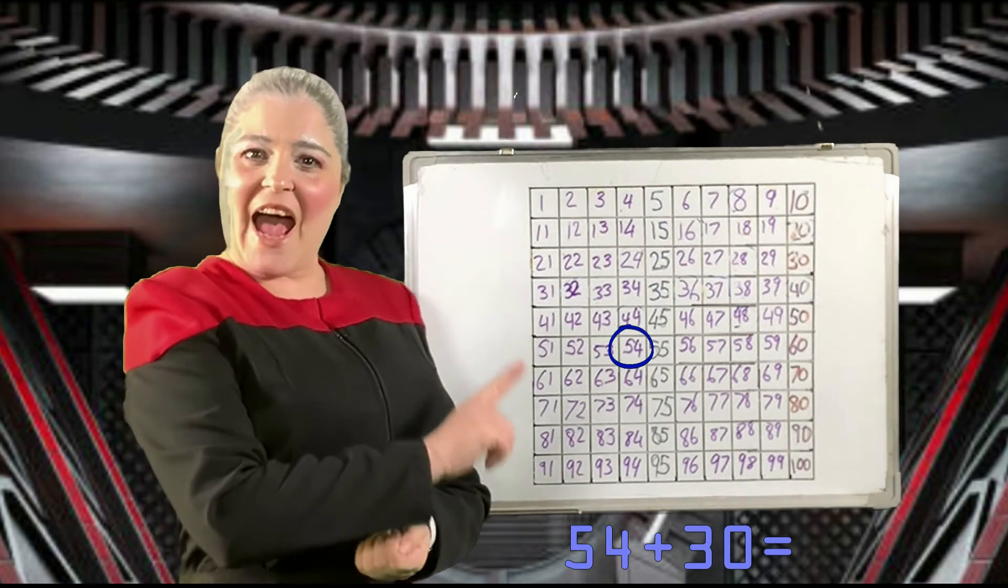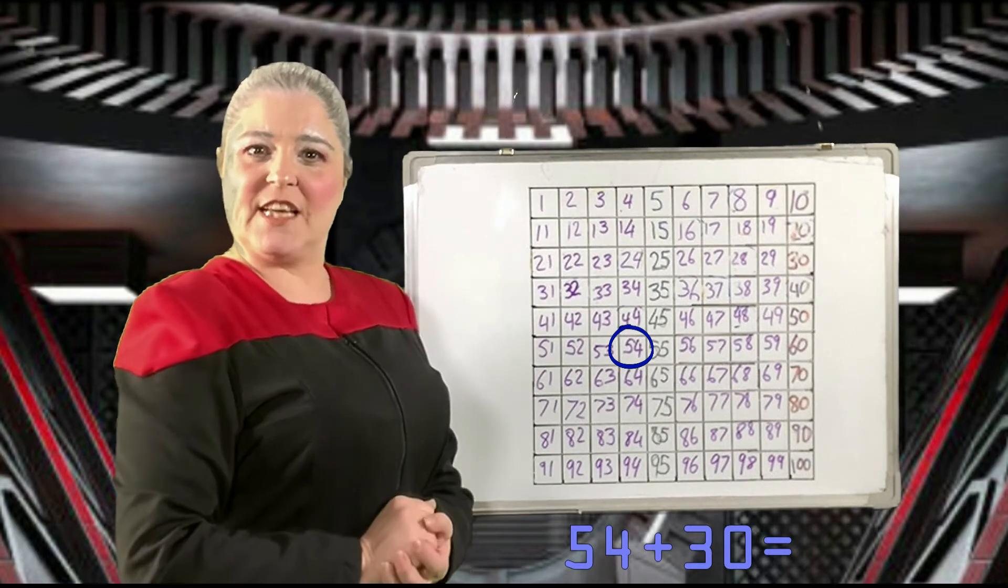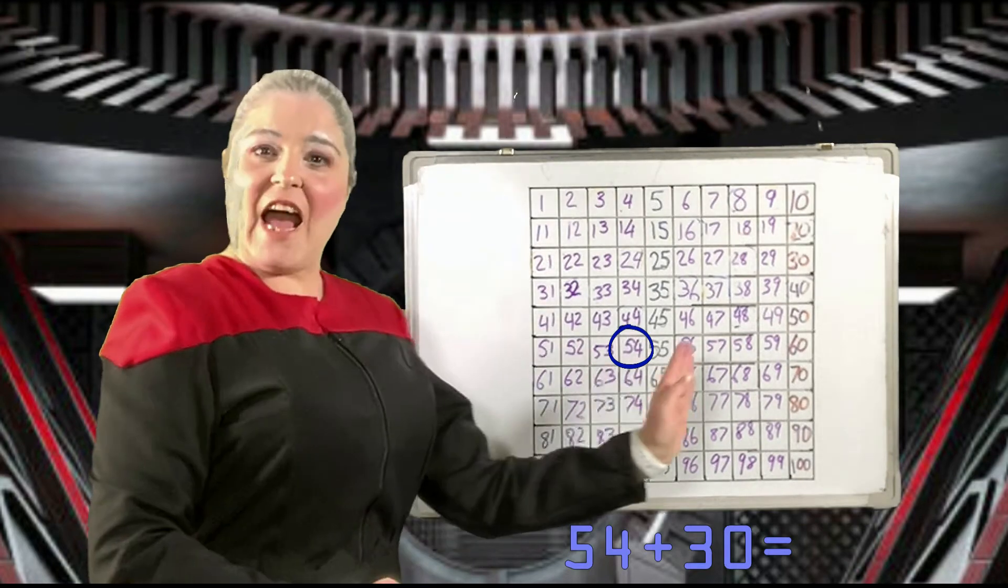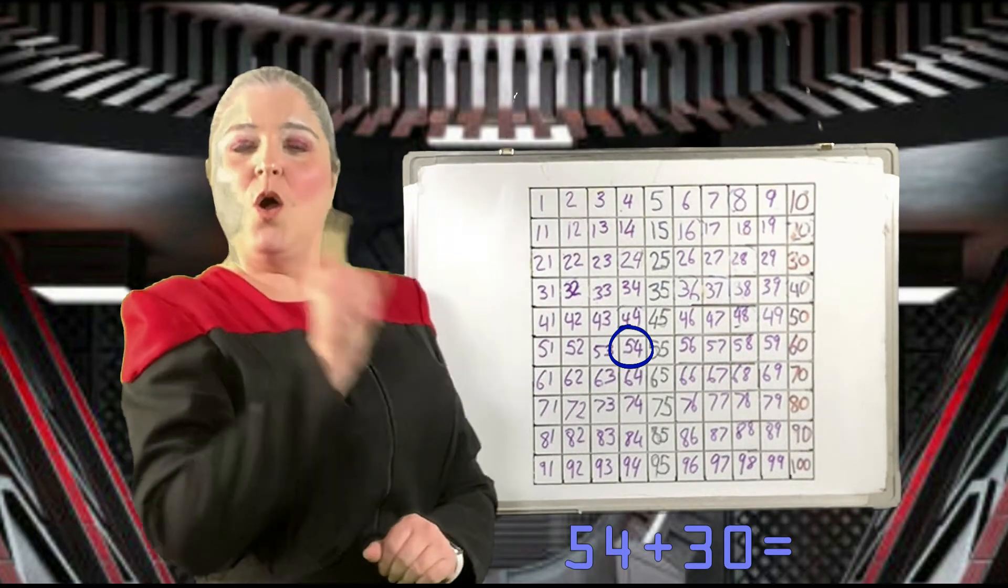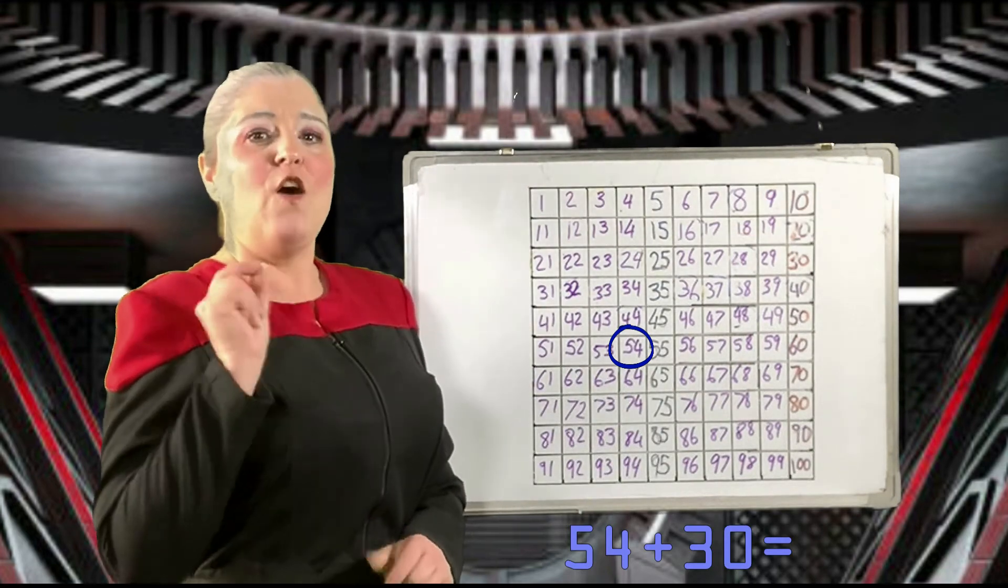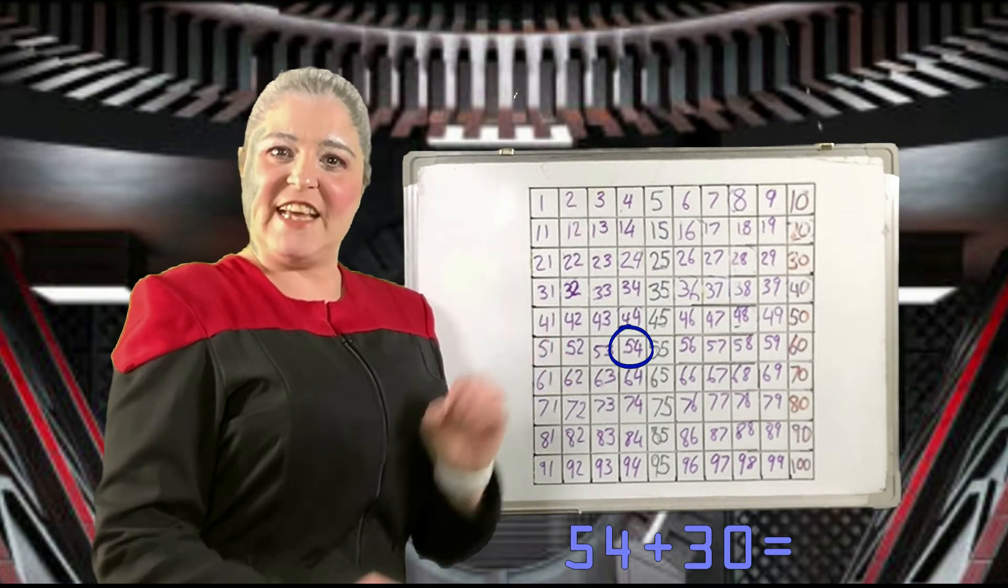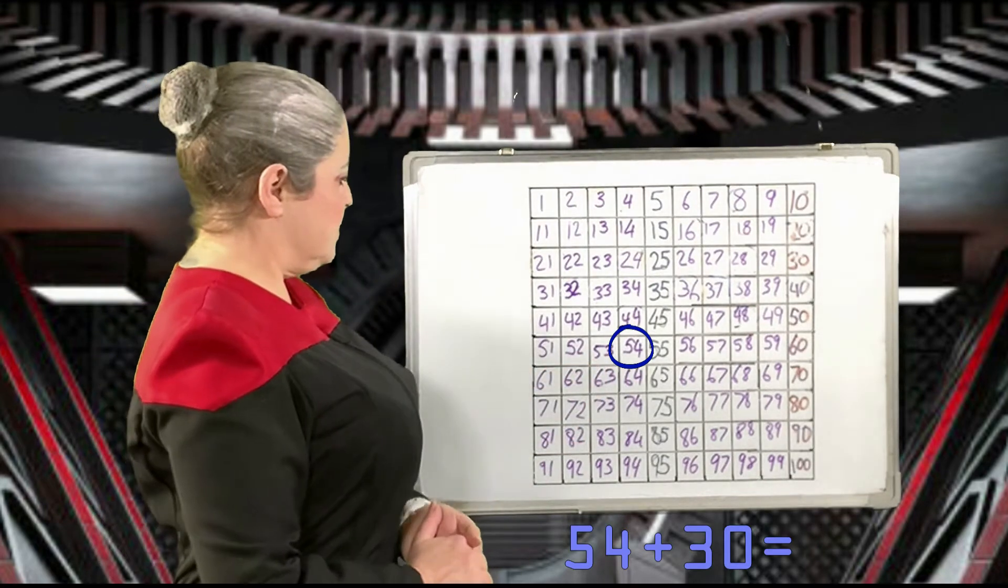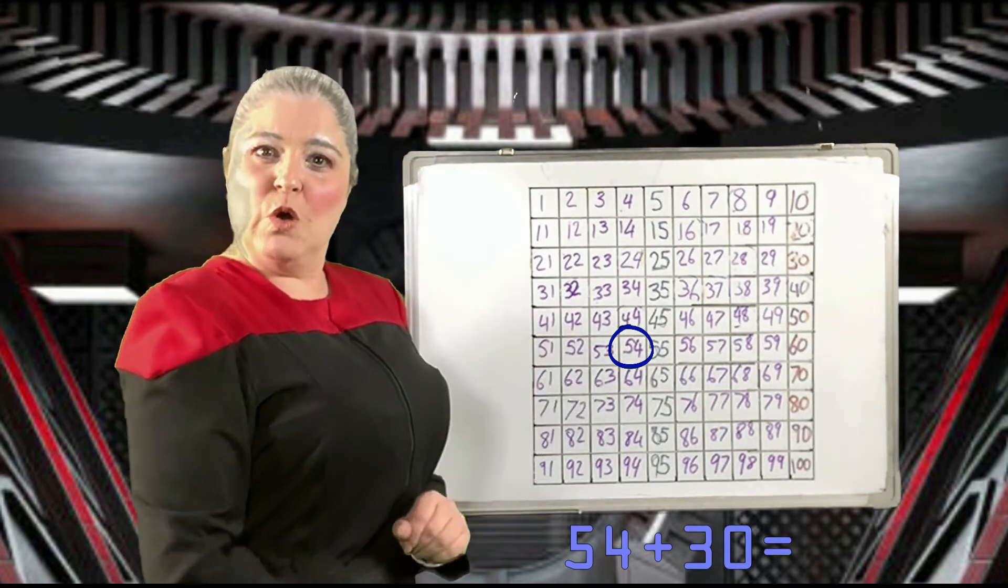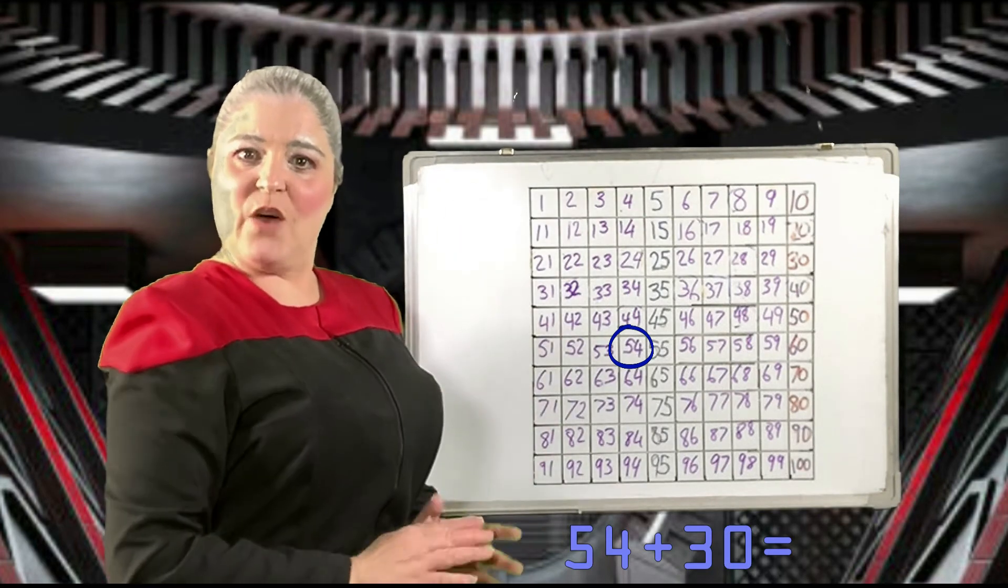Now, to add 30, we have that shortcut that we just learned. We don't count by ones. We go straight down the number square, one square for every multiple of 10. 30 has three multiples of 10 in it. So, move three squares straight down your number square.